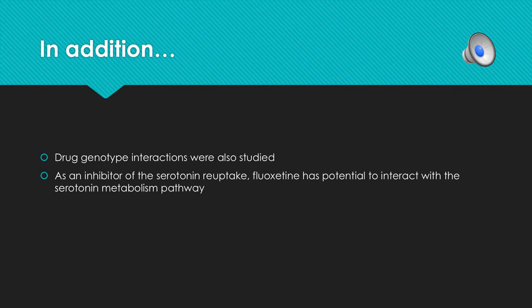In addition to this study, we also studied drug-genotype interactions. As an inhibitor of serotonin reuptake, fluoxetine has potential to interact with the serotonin metabolism pathway. In the next slides, you will discover the methods, the discussion, and the results of this study.